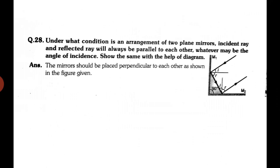Two plane mirrors are given and you are asked to arrange them so that the final reflected ray is always parallel to the incident ray, regardless of the angle of incidence. Experiments show that when two plane mirrors are placed perpendicular to each other (at 90 degrees), any incident ray reflects off one mirror, then the other, and returns parallel to the original incident ray. So if two plane mirrors are placed perpendicular to each other, the incident and reflected rays will always be parallel to each other.